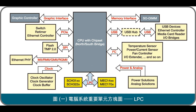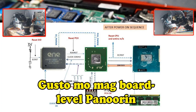Memory Controller Integration. Chipsets typically include a memory controller to manage access to system memory (RAM). In integrated chipsets, the memory controller is often integrated directly into the chipset, eliminating the need for a separate memory controller chip. This integration improves memory performance, reduces latency, and saves board space and power.